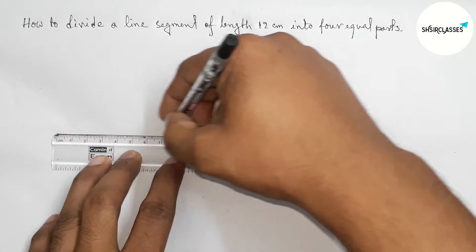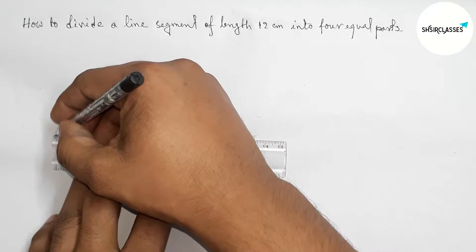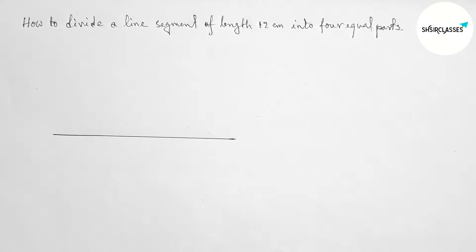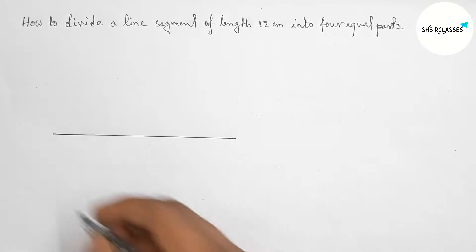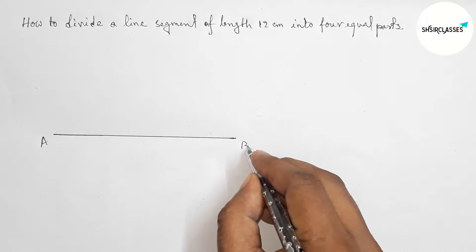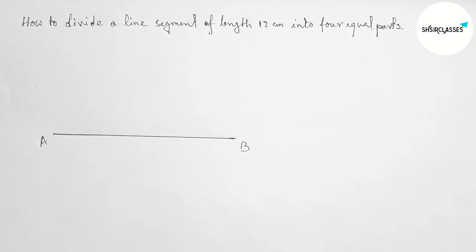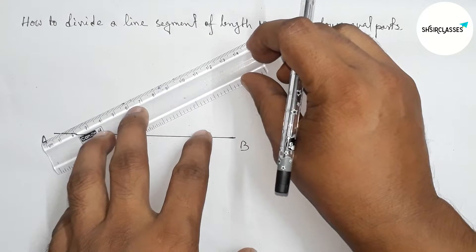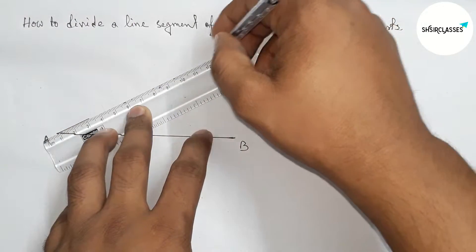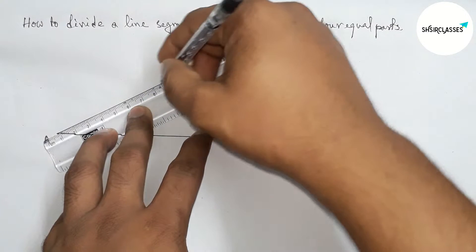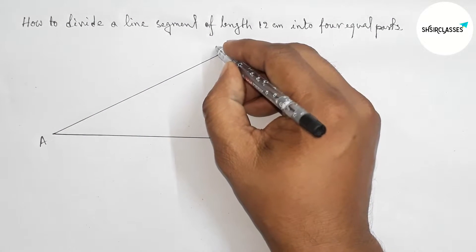Taking here point A and here B. Now drawing an angle on the point A with the help of scale by this way. So drawing any angle on the point A.